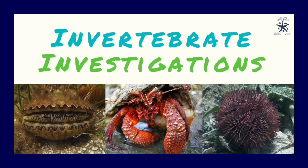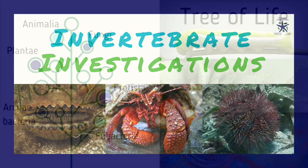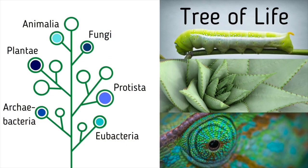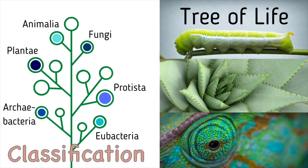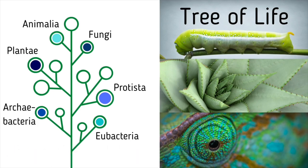Today we are diving into the world of invertebrates. How can we tell the difference between groups of invertebrates? Organisms are sorted into groups based on their similarities in a process scientists call classification. Classification helps scientists better understand the tree of life.